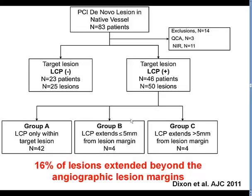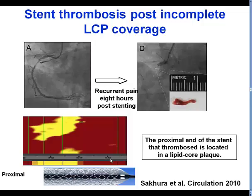In a study from Beaumont, what was seen is that 16% of lesions that were treated with stents actually extended beyond the lesions that can be detected by angiography, suggesting that knowing the extent of lipid core plaque can help in selecting the length of stent.